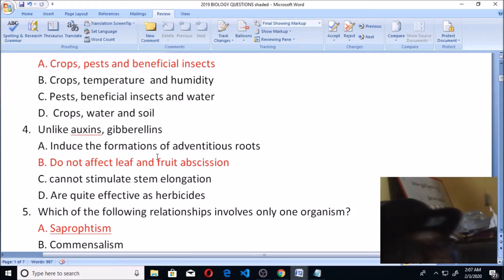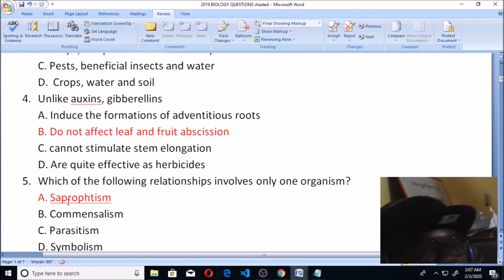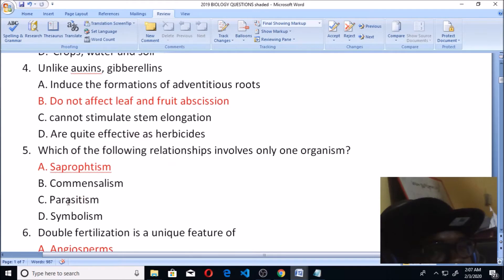Let's look at number five: which of the following relationships involves only one organism? When we talk about symbiosis, it involves two, both of them benefiting from one another. It's not symbolism, please, this is symbiosis. When you talk about parasitism, it involves two animals, one benefiting and the other one not benefiting.